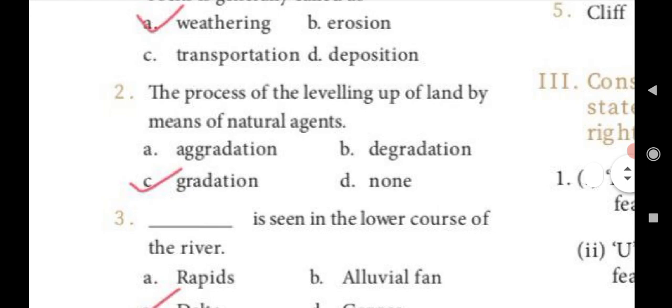Question two: The process of leveling up of land by means of natural agents? Answer C, gradation. The process of leveling up of land by means of natural agents is gradation.